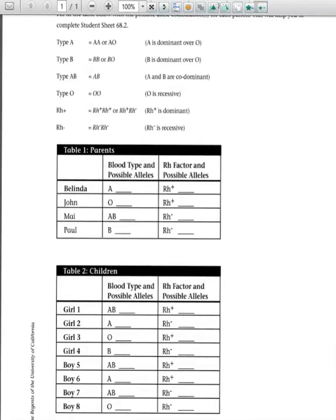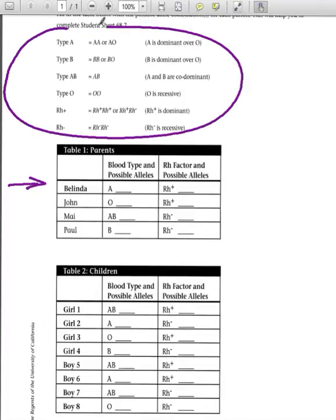When trying to figure out the possible alleles for a blood type, look at the possibilities above. Belinda happens to have Type A blood, so looking at the key above, she should have the possible allele combinations of A, A, which is this right here, or she can have A, O, which is this right here.